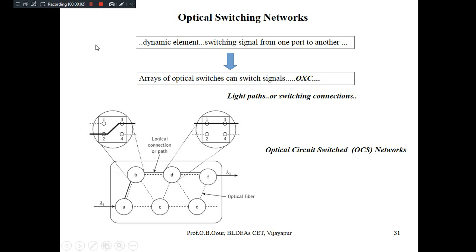Welcome to this session on Module 5: Optical Switching Networks. The integral part of optical switching networks is the optical switching element, a dynamic element. The optical node is very much a functional or dynamic part of the switching networks — it acts like a demultiplexer, like an OADM, or performs a wide variety of other functions including switching signals from one port to another.